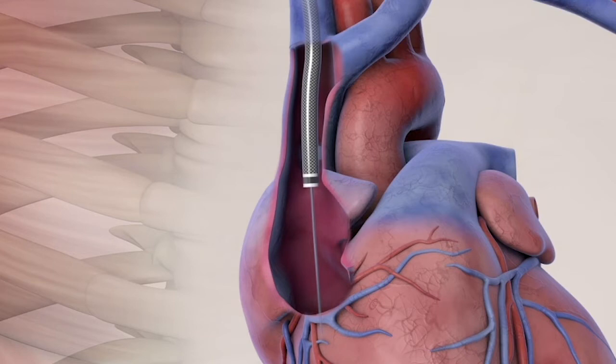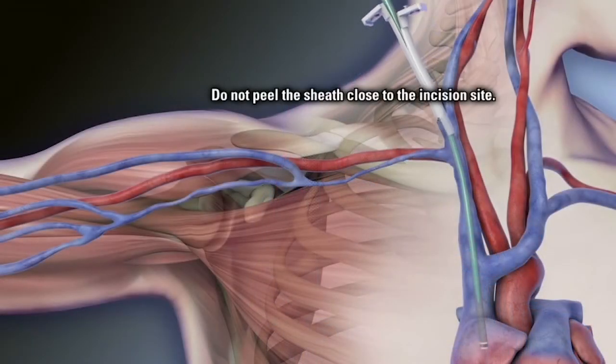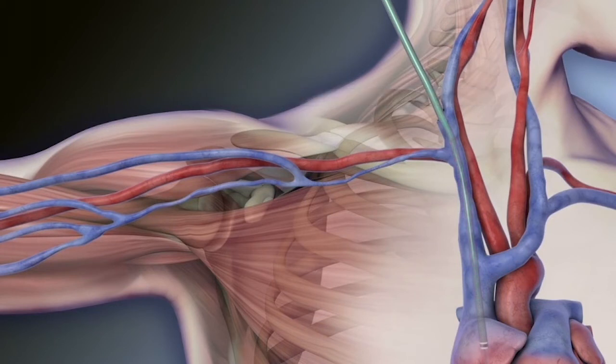Holding the stylet in place, continue advancing the venous outflow component into the mid to upper right atrium. Gently pull up while peeling away the sheath as it exits the incision site. Remove the guide wire and the stylet.